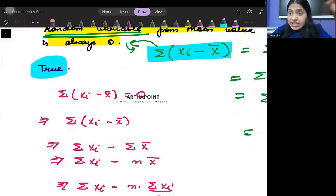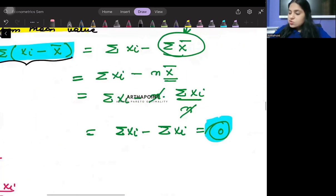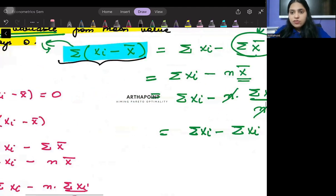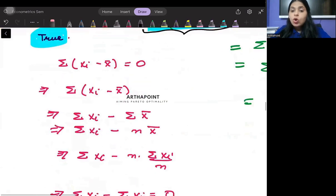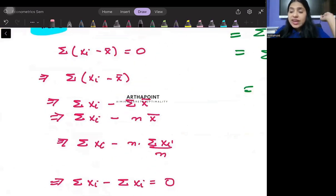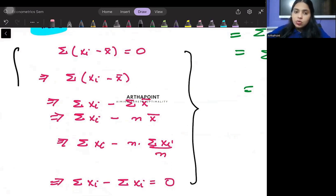Any xi, any random variable x, any random variable - when its deviation is found from its mean and added up, it will always give you the sum of deviation from means as zero. We haven't assumed any property about xi and still we are able to come to this conclusion.